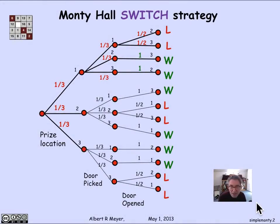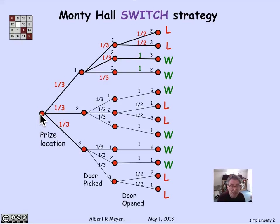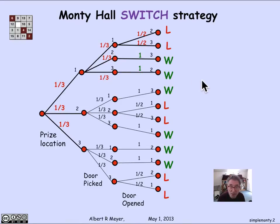Let's take another look at the Monty Hall tree that we worked with to figure out the probability of the switch strategy winning. This tree was just absolutely literal and absurdly complicated and large for what we're trying to analyze. We literally thought of each of the three outcomes of whether the prize was behind door one, door two, or door three, and then exactly which door the contestant picked next.